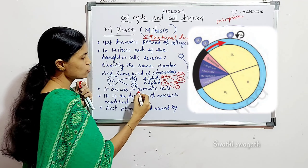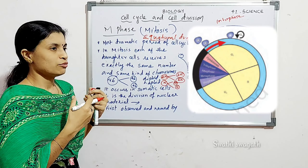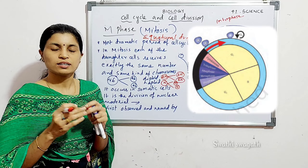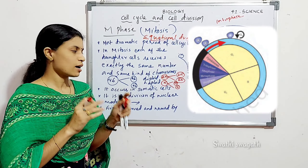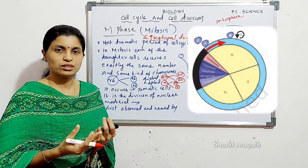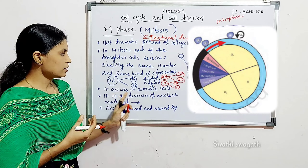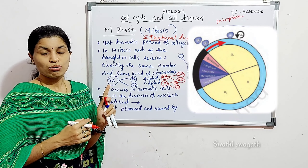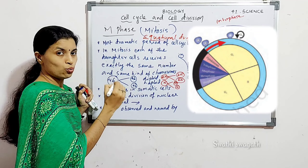Mitosis occurs in somatic cells. Somatic cells are the normal body cells, as distinct from reproductive cells. The normal body cells undergo mitotic division for growth. Mitosis is actually a division of the nuclear material — it is a division of the nucleus of a cell.